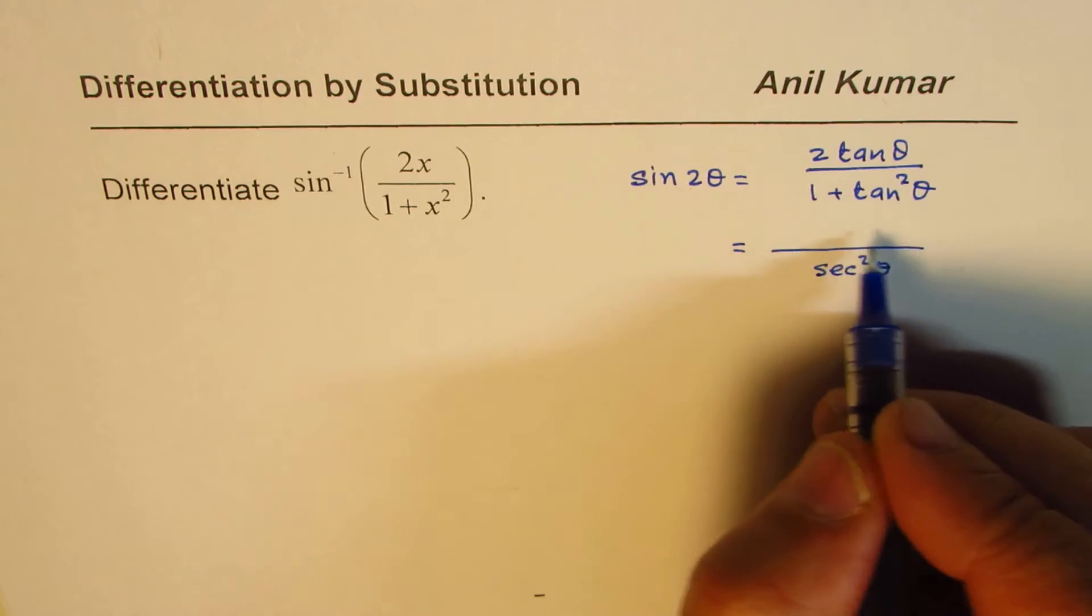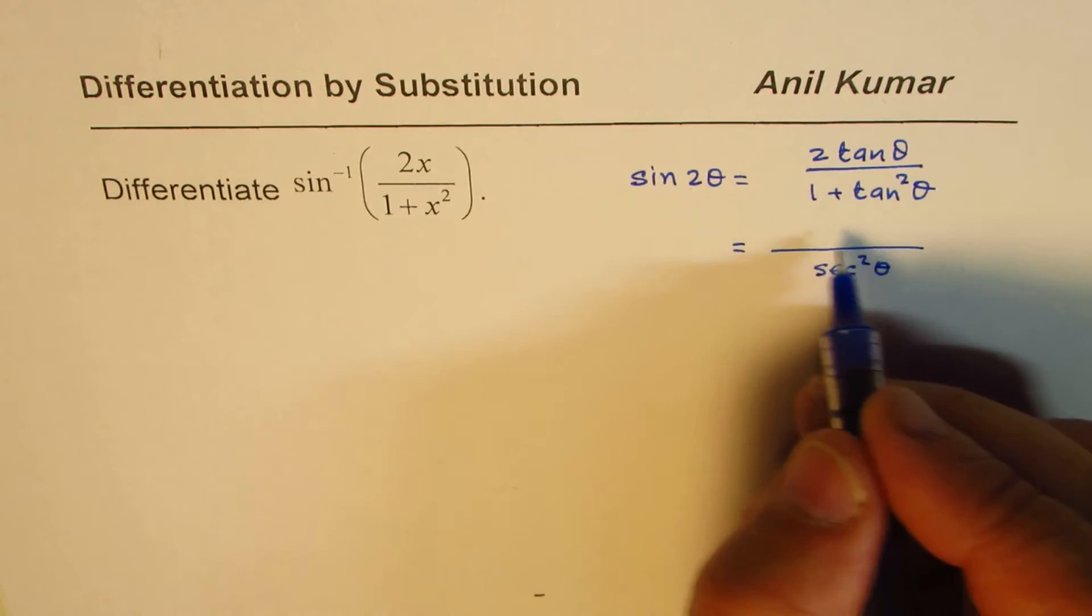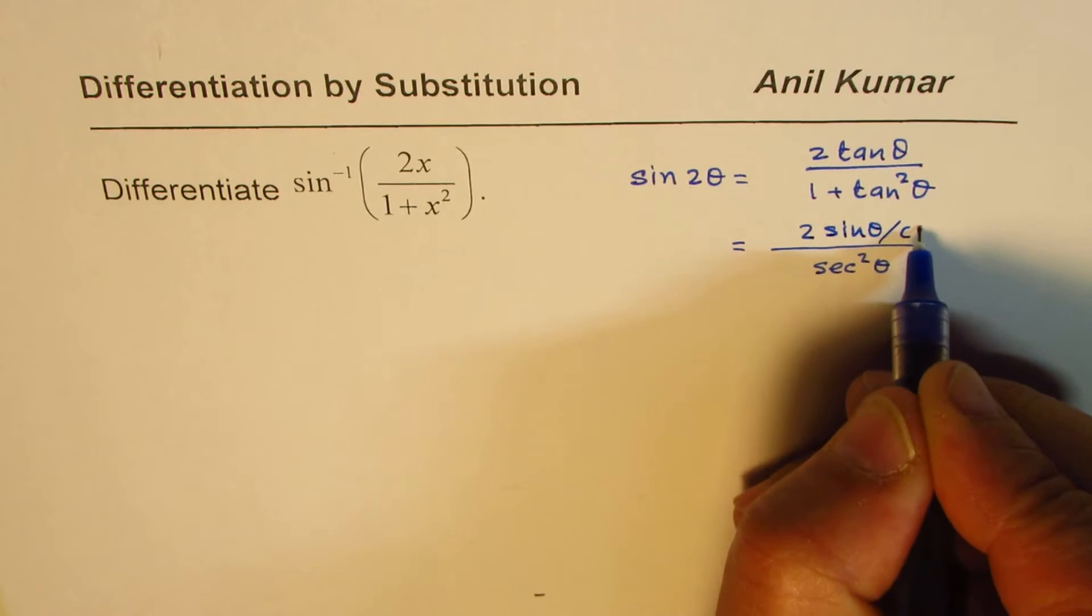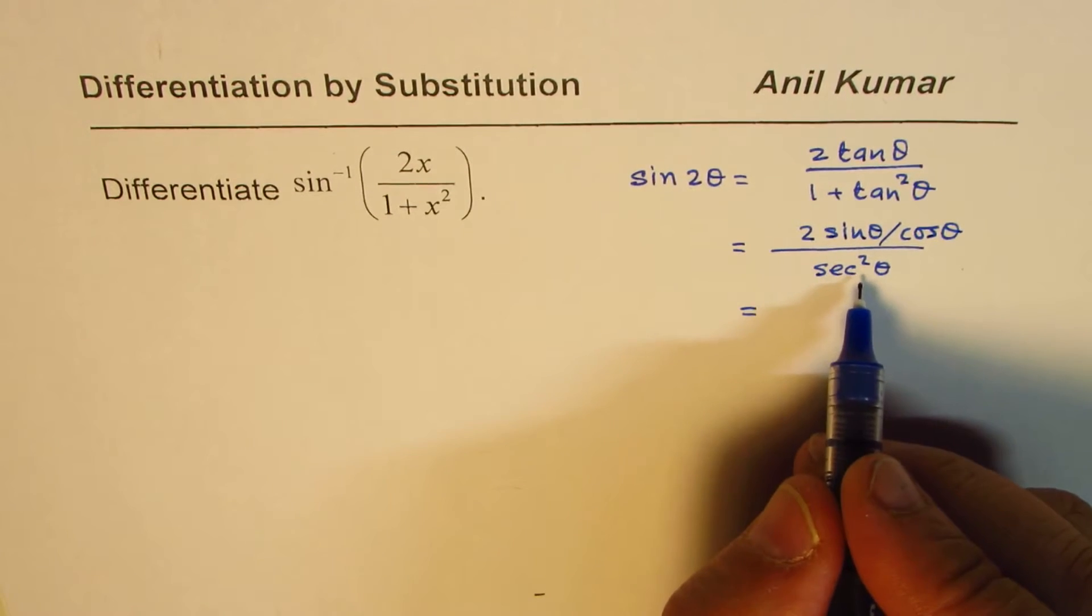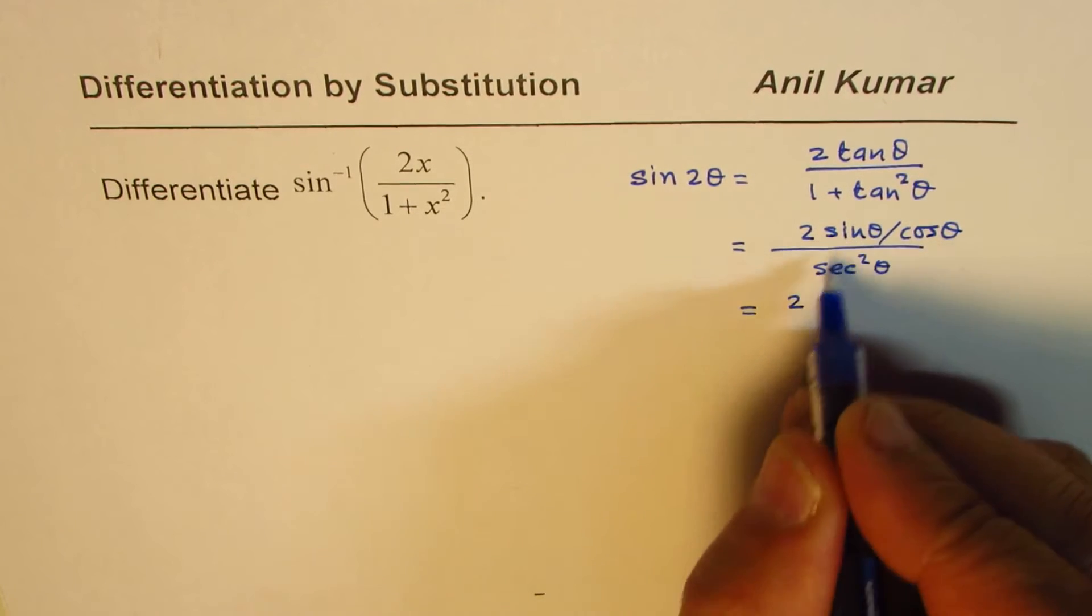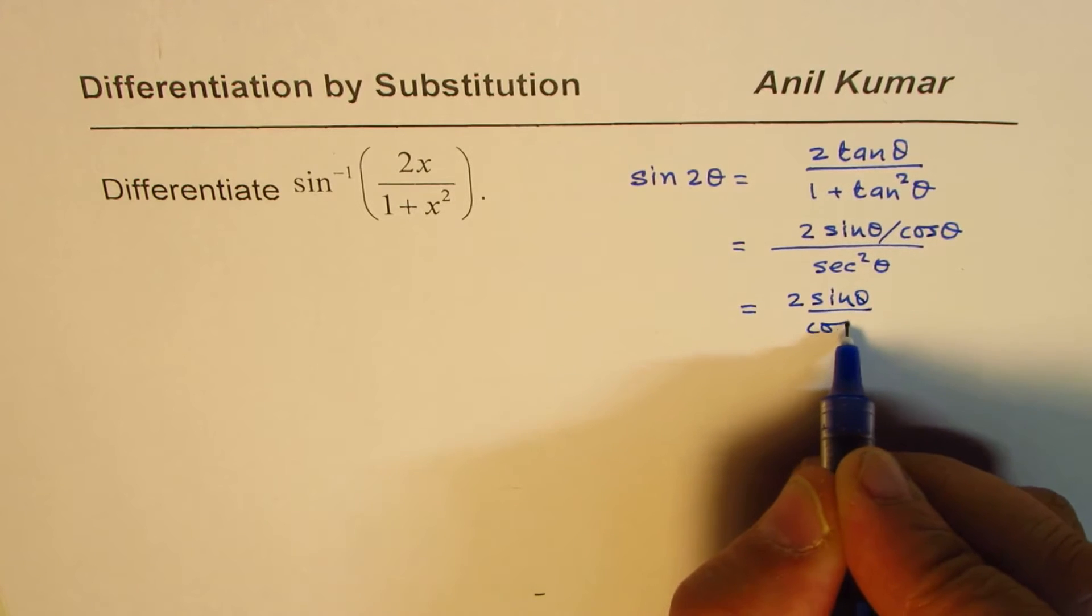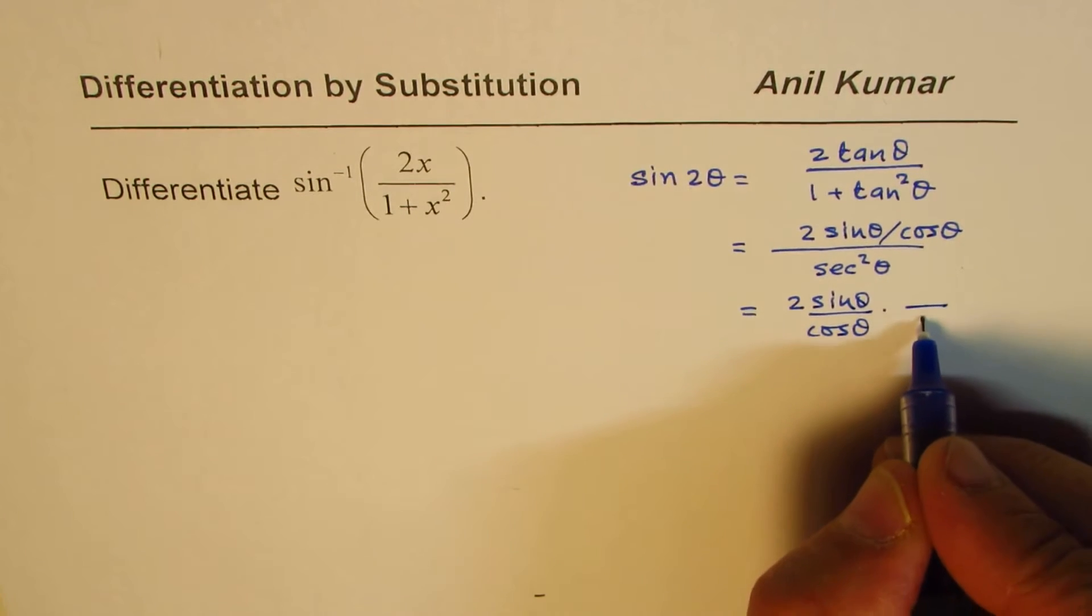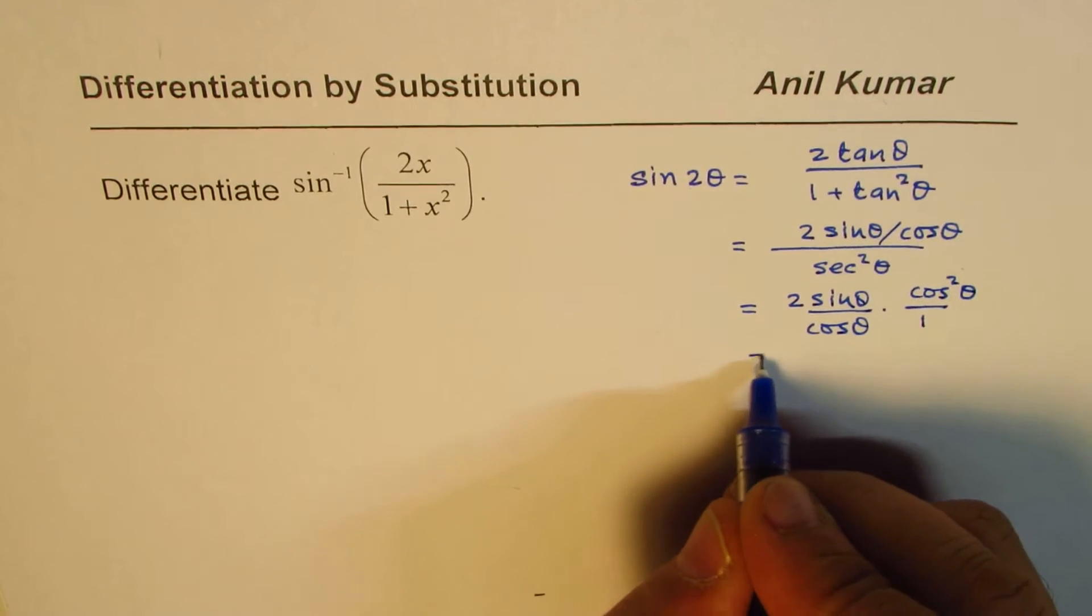Let me write this as sine theta over cos theta. Secant square theta could be written as 1 over cos square theta.